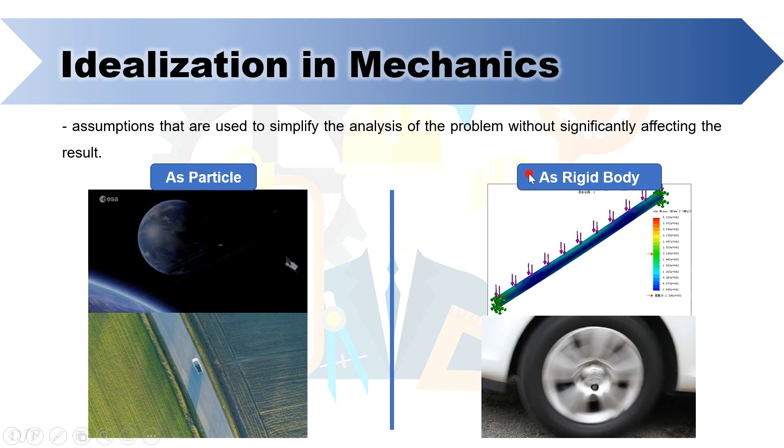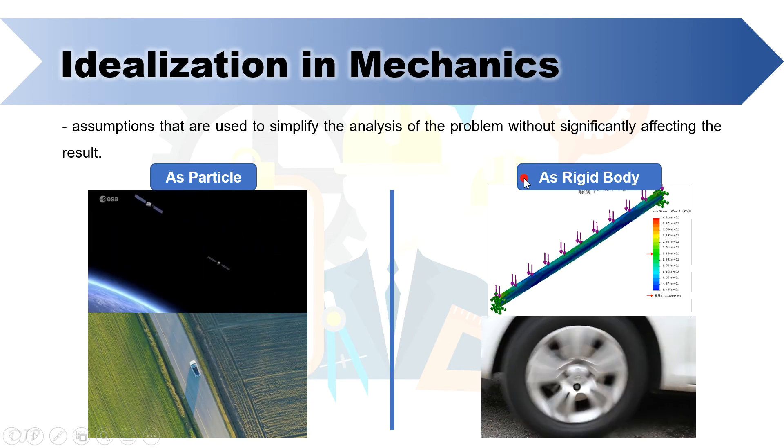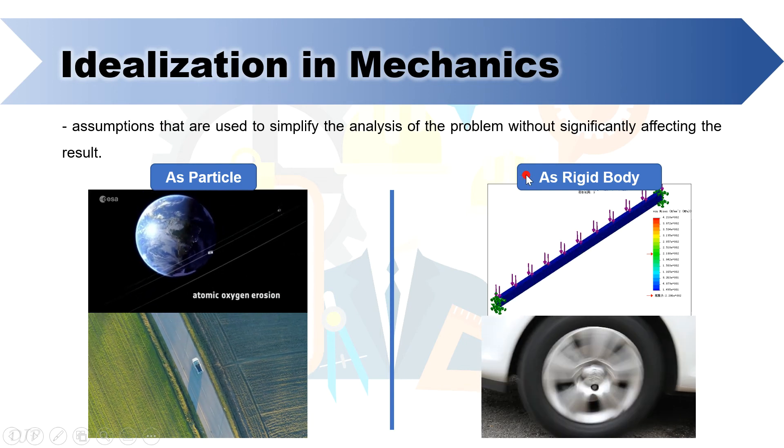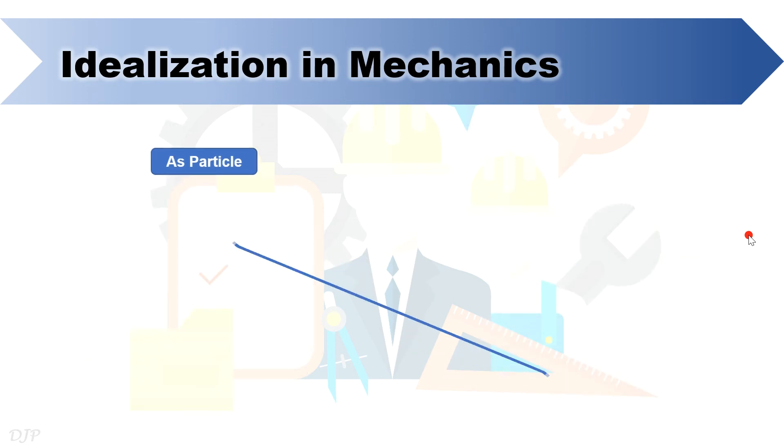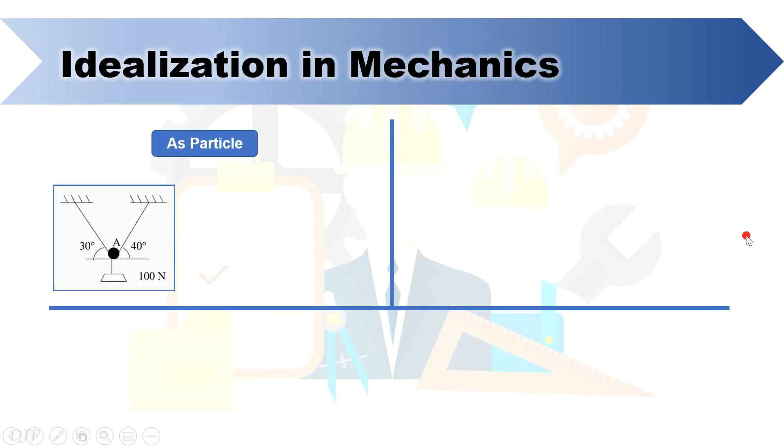To have some initial background right now on how these idealizations will be applied during problem solving, let's take note of the following example. You can see in this figure that a 100N object is hung with the use of cable wires and pulley. In this case, you can idealize the pulley as a particle by drawing it like a dot at point A and then drawing the applied forces on the particle.